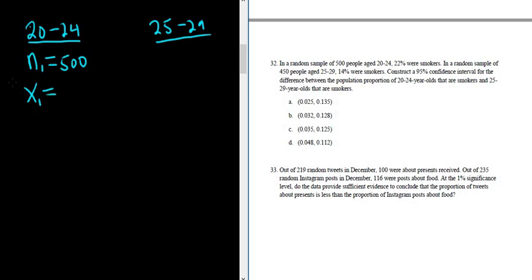So to find x, it's going to be 22% of 500. Remember, of means multiply in mathematics. So 22% times 500. Type it in my calculator. 22% times 500. So 110. So x sub 1 is equal to 110.